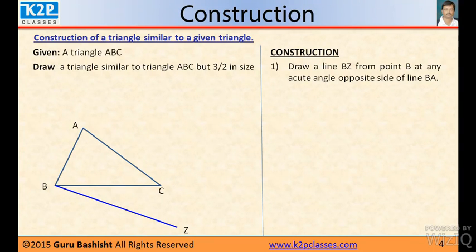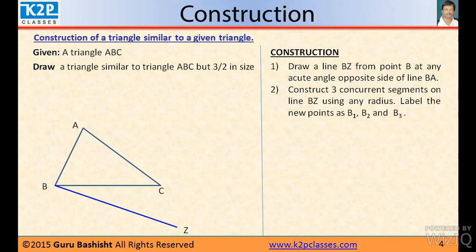So, draw a line BZ from point B at any acute angle opposite side of BA. Since three and two, which one is greater? Three. So, divide it in three. Then, join B2 and C.